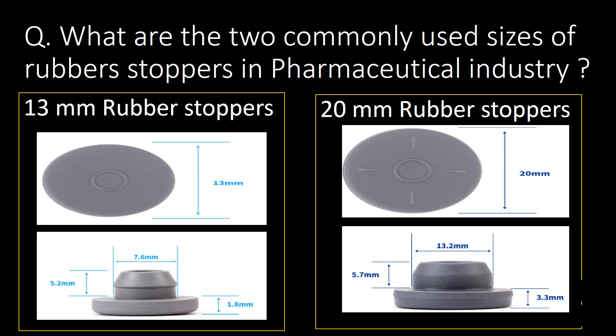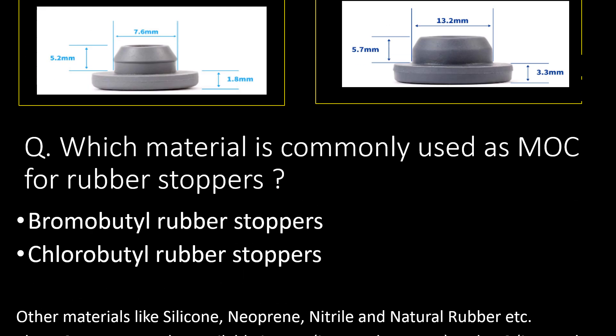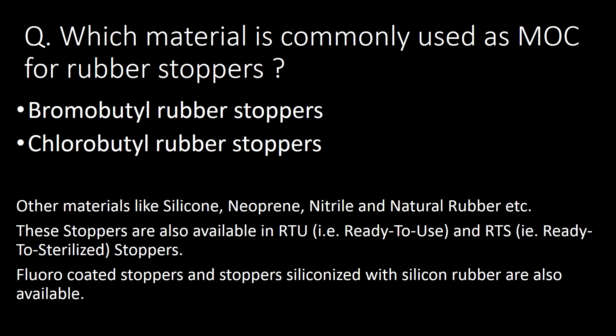You can refer to the pictorial presentation below for understanding sizes of rubber stoppers used in the pharma industry. Which material is commonly used as MOC for rubber stoppers? Bromobutyl rubber stoppers and chlorobutyl rubber stoppers are commonly used. Other materials like silicone, neoprene, nitrile, and natural rubber are also used as MOC. These stoppers are available in RTU (ready to use) and RTS (ready to sterilize) format. Fluoro-coated stoppers and stoppers siliconized with silicone rubber are also available.